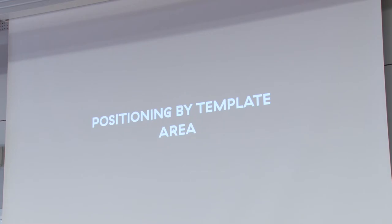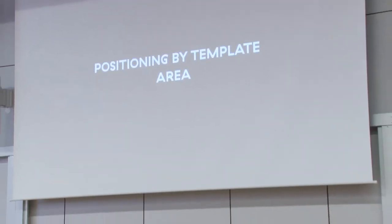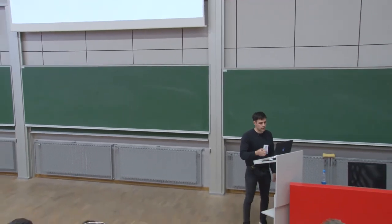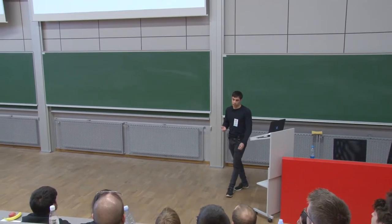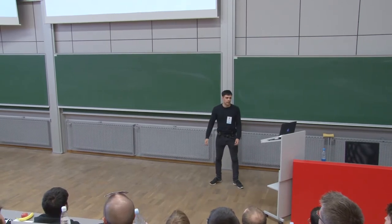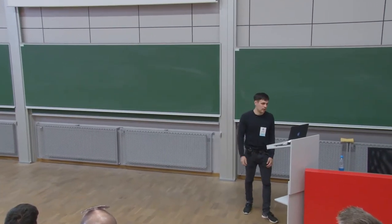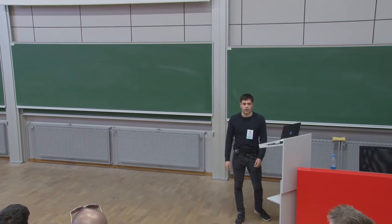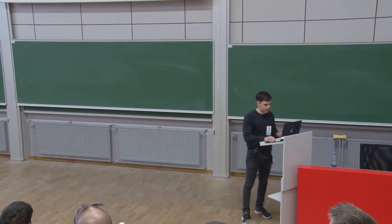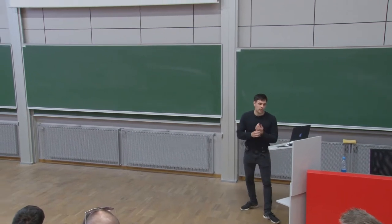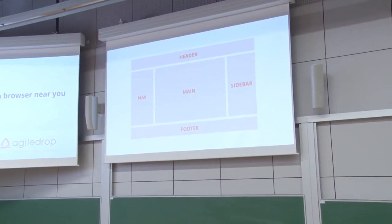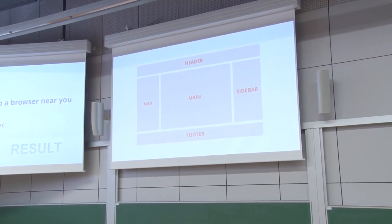Now let's go to template areas — this is where things really become cool and powerful, in my opinion. What is a grid area? A grid area is any total space surrounded by four grid lines. It's really simple and can contain any number of grid cells. For this example, we're going to create something that resembles a holy grail layout — we'll have a header, nav, main, sidebar, and footer.